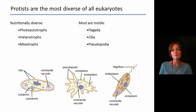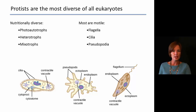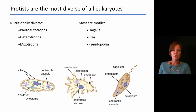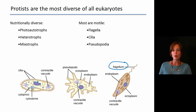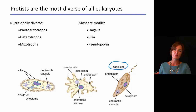We also have many protists — really most protists — that are going to be motile, meaning the entire cell will be able to move. They do this with a number of different types of appendages or structures. Flagella are more tail-like; you might have one or just a couple, and they provide a very fast, directional movement.